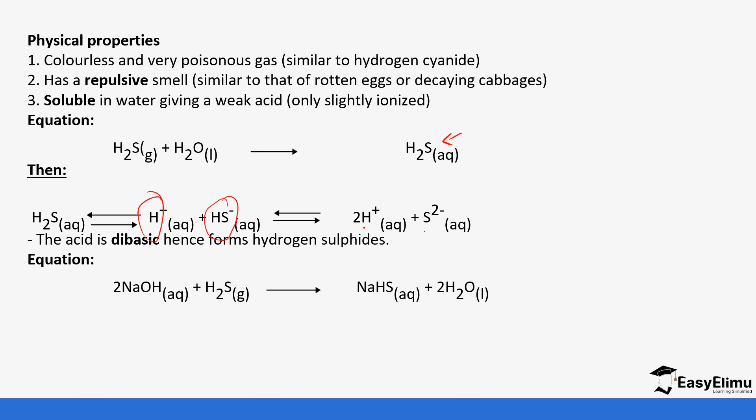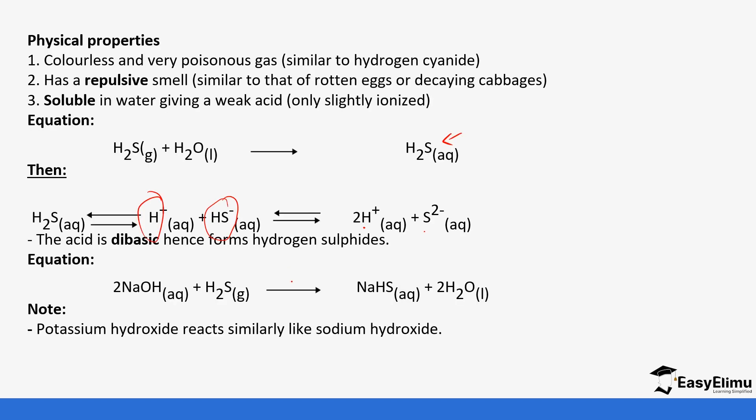One of the hydrogen ions reacts with the hydroxyl ions to form water, forming sodium hydrogen sulfide. Potassium hydroxide also reacts in the same manner as sodium hydroxide.